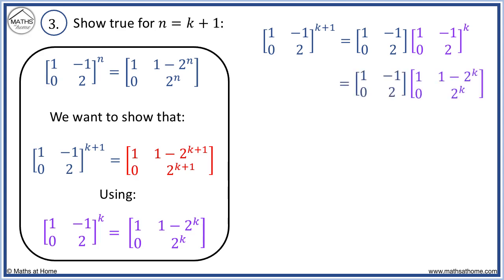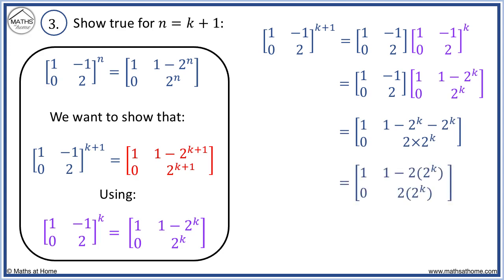We now replace the matrix to the power of k using our assumption from step 2, then multiply these two matrices. Using matrix multiplication, we obtain the result, where each 2 times 2 to the power of k equals 2 to the power of k plus 1. This is the result we were trying to prove, as shown on the left.